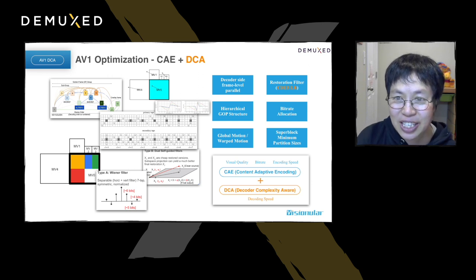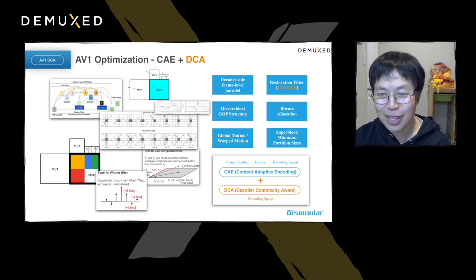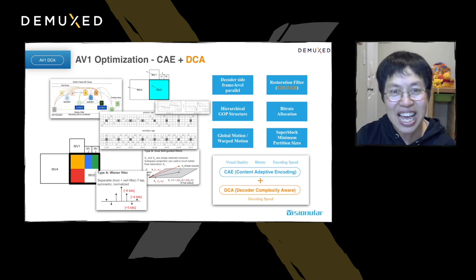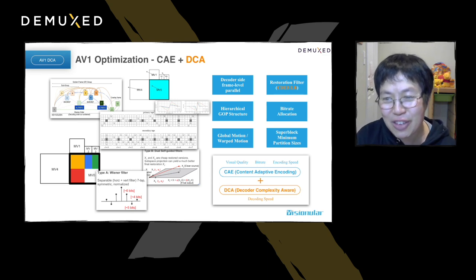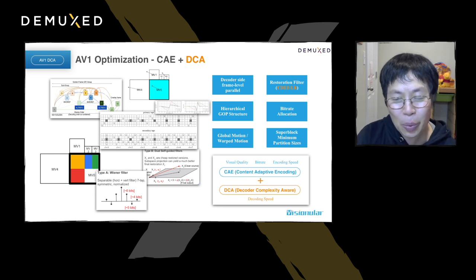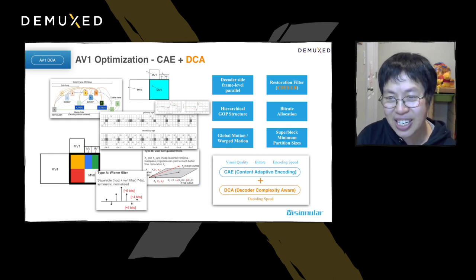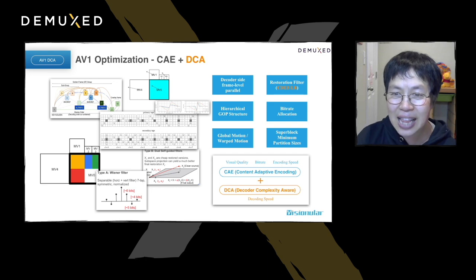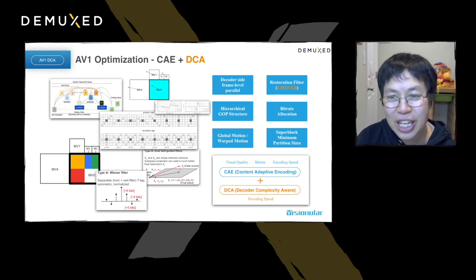Based on these discussions, we propose a new concept we call DCA — Decoder Complexity Aware Encoding Optimization. We already talk about content-adaptive encoding, where the CAE optimized encoder considers the tradeoff between visual quality, bitrate, and encoding speed. With the additional DCA layer in mind, we include consideration of decoding speed, achieving a good tradeoff among all four factors.